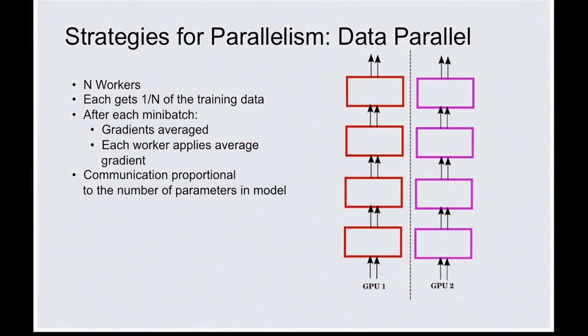Strategies for parallelizing break down into data parallel and model parallel. In data parallel, you split the dataset into N shards and train N replicas on different parts. One problem is you've got N different models that went to different places because they computed different gradients, so you need to sync them back up periodically — communication proportional to model size. With N greater than two, you need a reduce tree or some communication pattern. Model parallel exploits inherent locality in computation — you need to recover the computation graph from the model — and communication is proportional to layer inputs and outputs rather than model size.